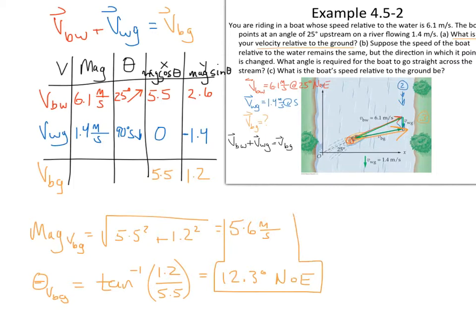Since we have a positive x and positive y, that's 12.3 degrees north of east. That's the actual direction — a much shallower angle than the original attempted 25 degrees. The stream's current is pushing you downstream, so it's not as sharp an angle upstream. That's chapter 4.5, example 2. In the next video segment we'll address parts B and C, so keep this in mind. Thanks for following along — see you on the next one.